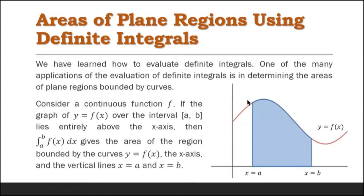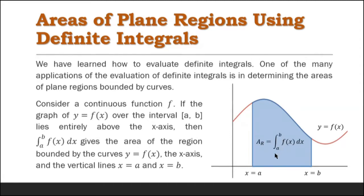We have the function y equals f(x) and the area bounded by the region from x equals a to x equals b. This is the area of the region, given by the definite integral of f(x) dx from a to b.